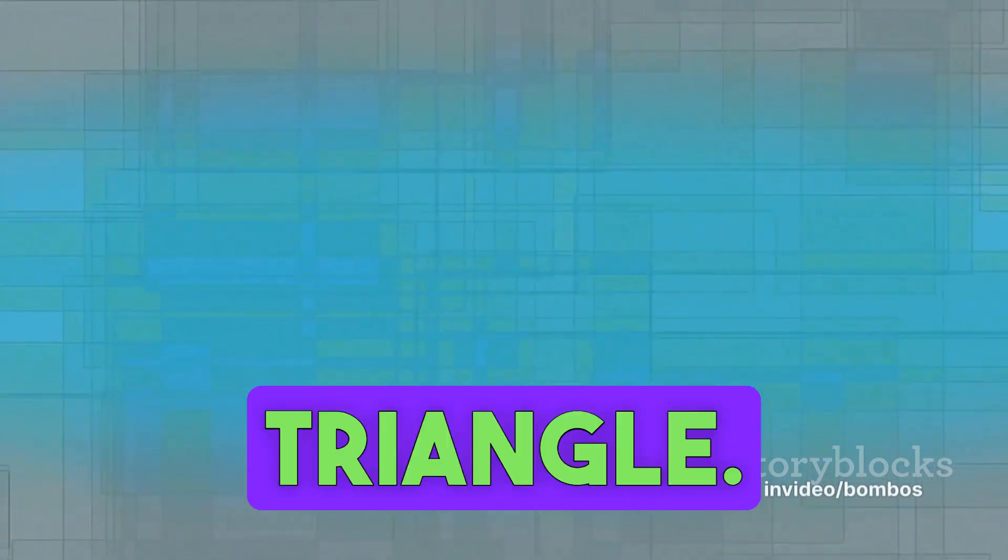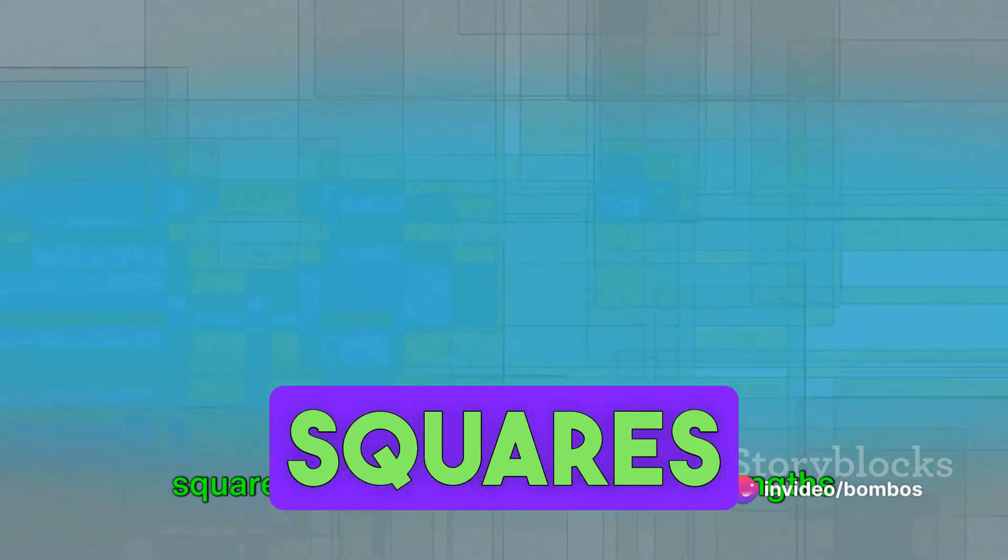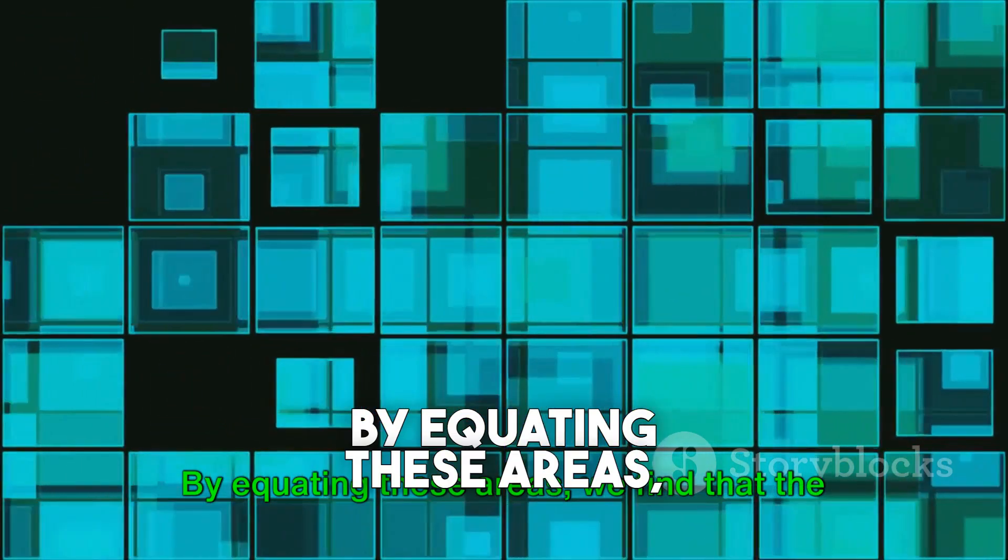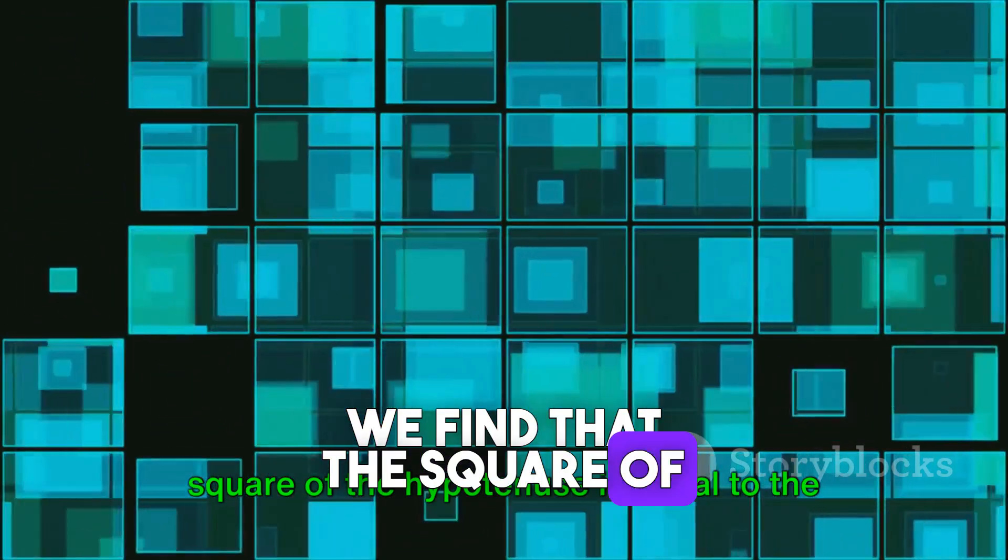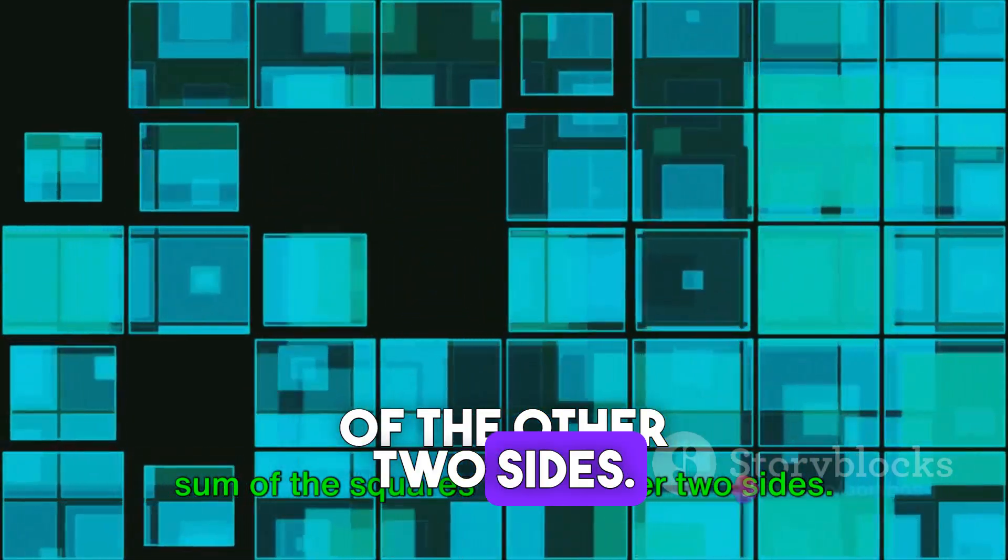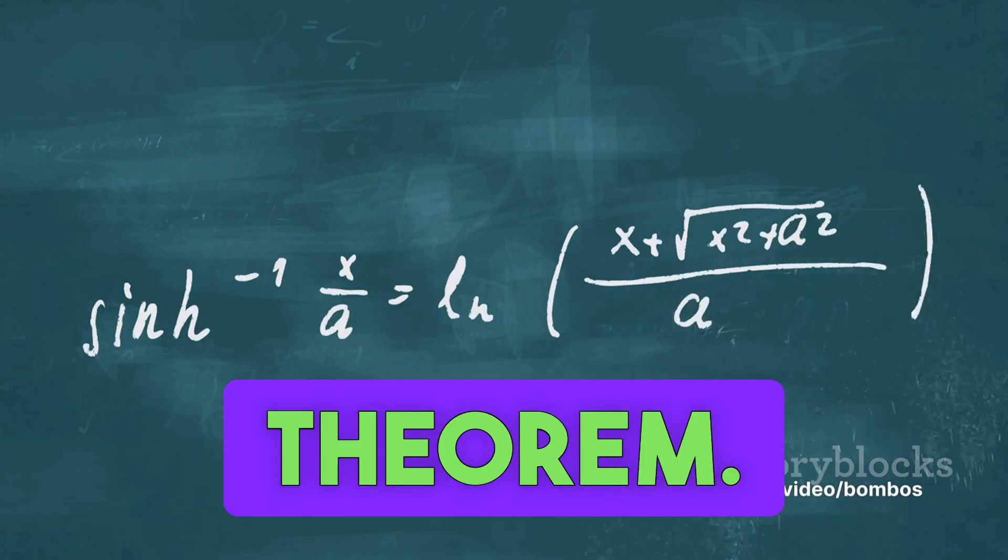Now, consider the squares on the two sides of the triangle. Their areas are proportional to the squares of the corresponding side lengths of the triangle. By equating these areas, we find that the square of the hypotenuse is equal to the sum of the squares of the other two sides. This completes the proof of the Pythagorean theorem.